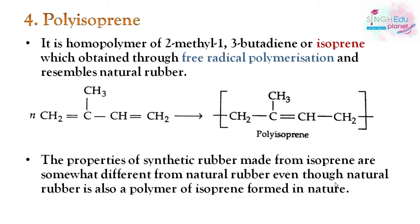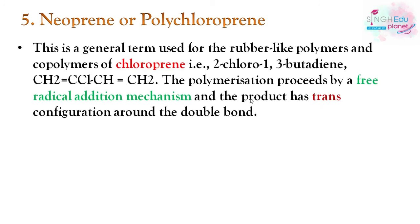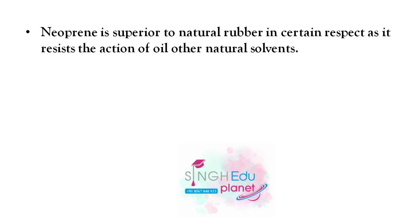The last synthetic rubber is neoprene, or polychloroprene. It is the general term used for rubber-like polymers and co-polymers of chloroprene. Chloroprene is 2-chloro-1,3-butadiene. The polymerization proceeds by a free-radical addition mechanism, and the product has trans configuration around the double bond. It is prepared using potassium persulfate.